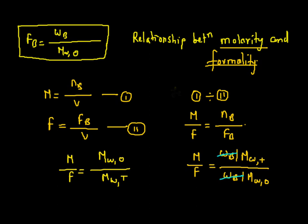Just take the inverse of these values. We will be having F upon M is equal to molecular weight theoretical upon molecular weight observed. And this particular value is nothing but i, that is nothing but Vant Hoff factor.